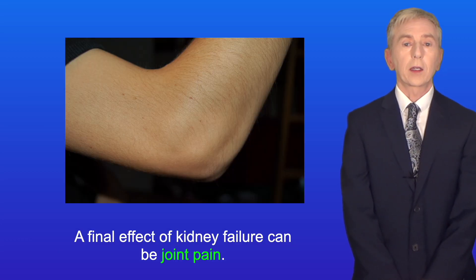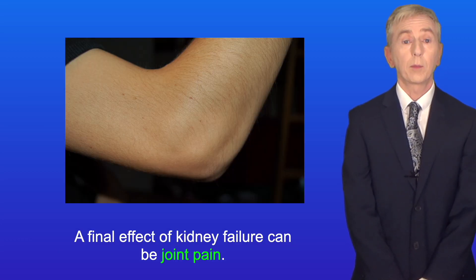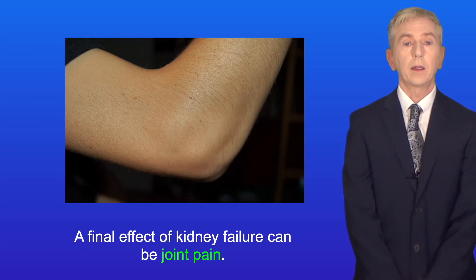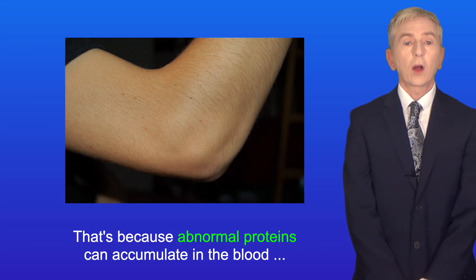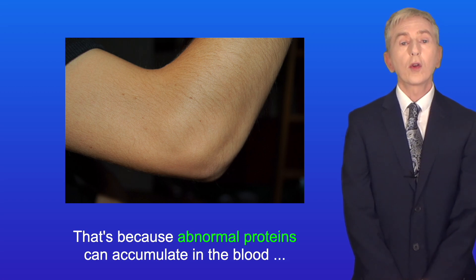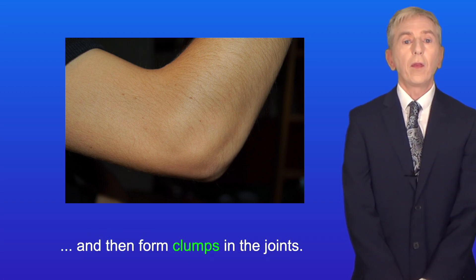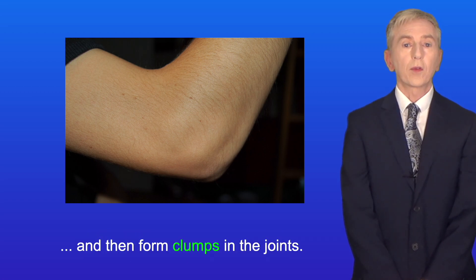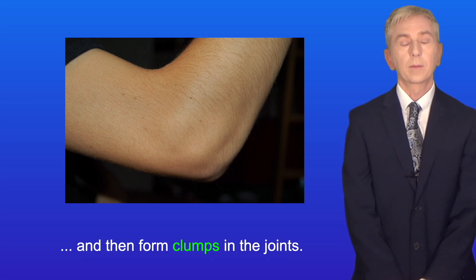A final effect of kidney failure can be joint pain. That's because abnormal proteins can accumulate in the blood and then form clumps in the joints.